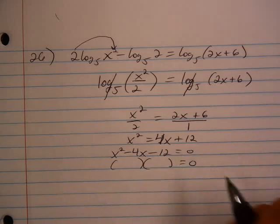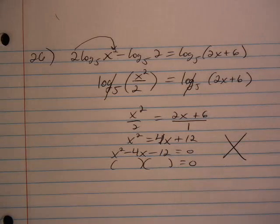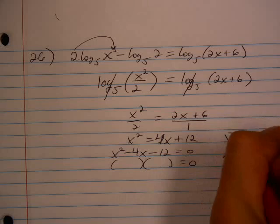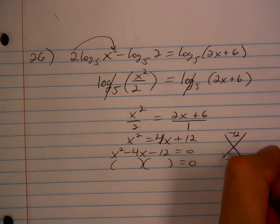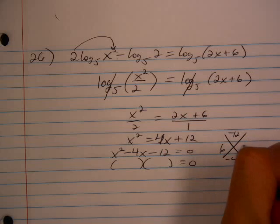And then it's a simpler factoring problem with the diamond. Negative 12 on top, negative 4 on the bottom. Two factors that will work here are 6 and 2.